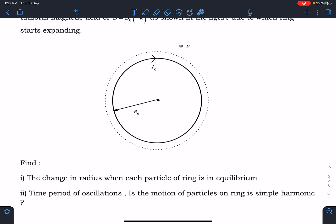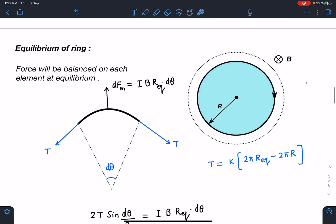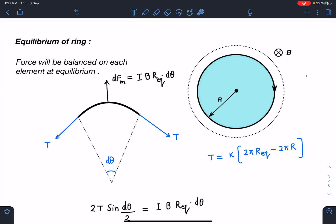Alright, so let's move to the solution part. First thing is let's analyze the situation of equilibrium. Since each part of this ring will be in equilibrium, force will be balanced on individual small elements present on the ring. So let's say the radius becomes R_equilibrium. If I take a small arc of it in equilibrium, this arc will have a force due to magnetic field.